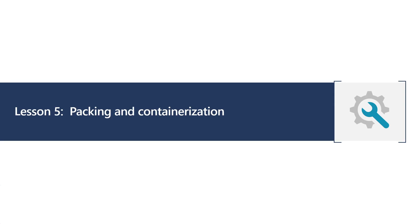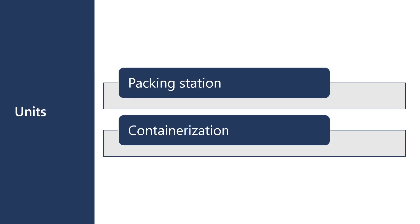Hello and welcome to lesson 5. This session is about the packing and containerization process in Dynamics 365 Supply Chain Management. In this lesson we're going to talk about the packing options in two sessions: the first one for the manual packing process using the packing station functionality, and the second session for the automated packing process, or as it's called, containerization.